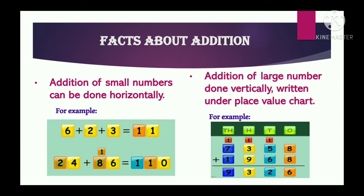Now students let us talk about some facts of addition. The first one is: addition of small numbers can be done horizontally. For example, here you can see we first add the ones digit, then give carry over to the tens digit, then add the tens place and write the answer.